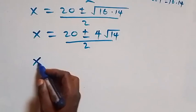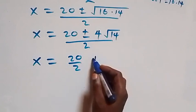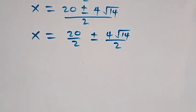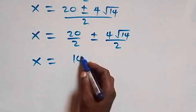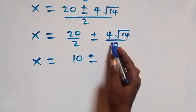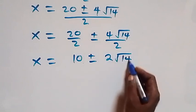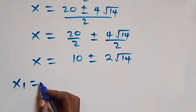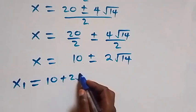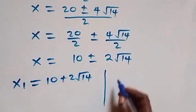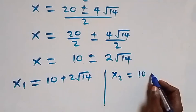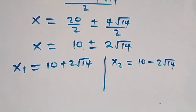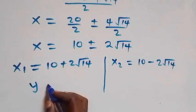Separating into two fractions, we have x equals to 20 over 2 plus or minus 4 root 14 over 2. That gives us x equals to 10 plus or minus 2 root 14. So we have two values: x1 equals to 10 plus 2 root 14 and x2 equals to 10 minus 2 root 14.